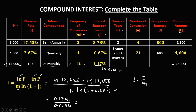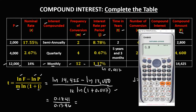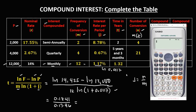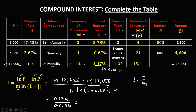So 0.1841 divided by 0.1396 equals 1.32. The time is 1.32 years. For the number of conversions N, that's M times the time: M is 12 times the time 1.32, so N is equal to 15.84.